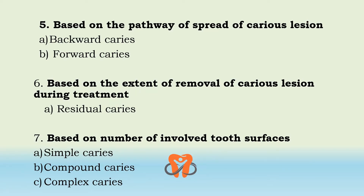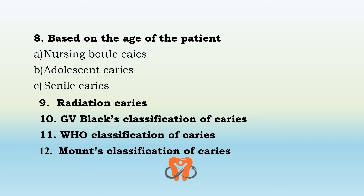Based on the pathway of spread of caries, it can be backward caries or forward caries. Based on the extent of removal of caries lesion during treatment, we have residual caries. Based on the number of involved tooth surfaces, it is simple, compound, or complex caries. Based on the age of the patient, it can be nursing bottle caries, adolescent caries, or senile caries. An independent classification is radiation caries. Then we have the GV Black classification — Black was the father of dentistry — who classified caries into six classes. The WHO and Mount classifications will be covered in the next video.